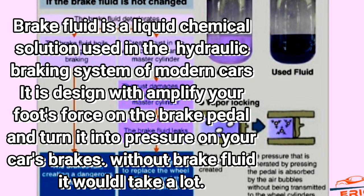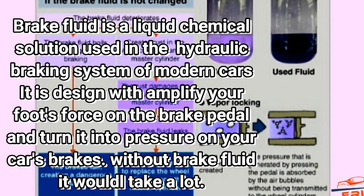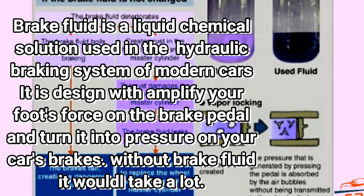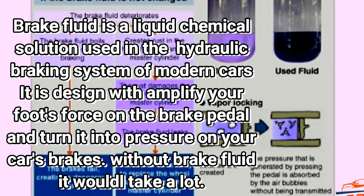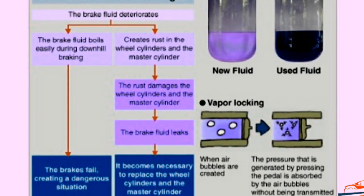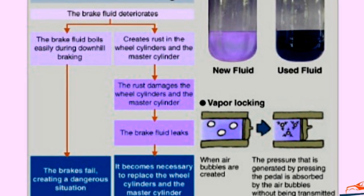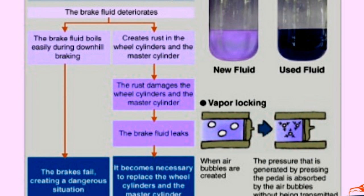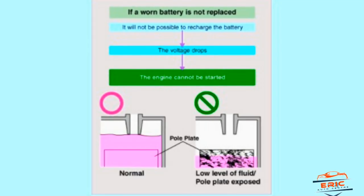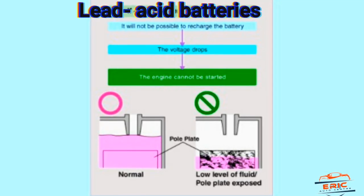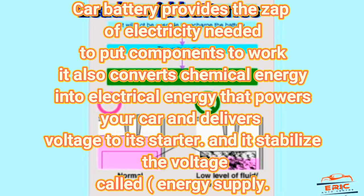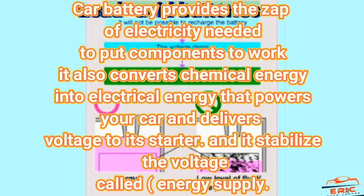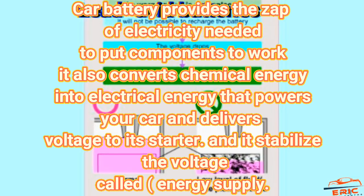This is the division of batteries — we have charcoal battery and lead-acid battery. The car battery provides the zap of electricity needed to put components to work. It also converts chemical energy into electrical energy that powers your car, and delivers voltage to the starter. It is what is called an energy supplier. This is also the work of the battery as you can see.